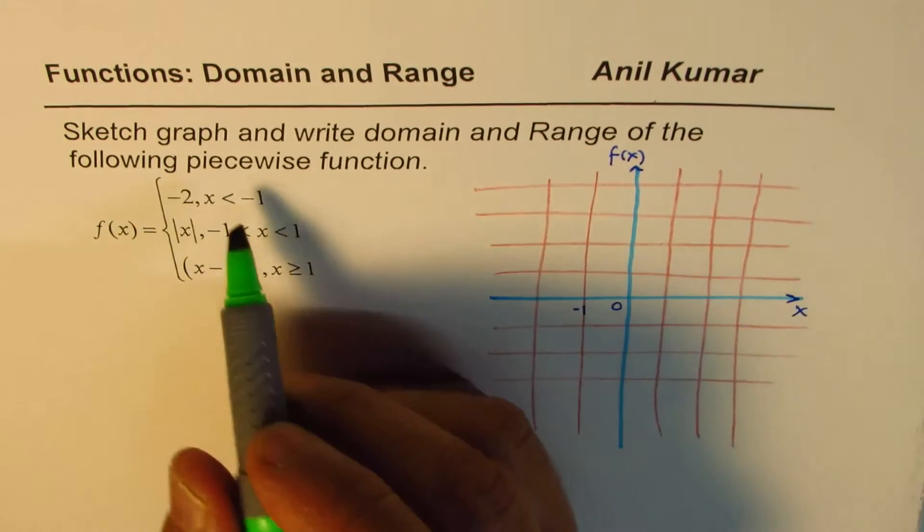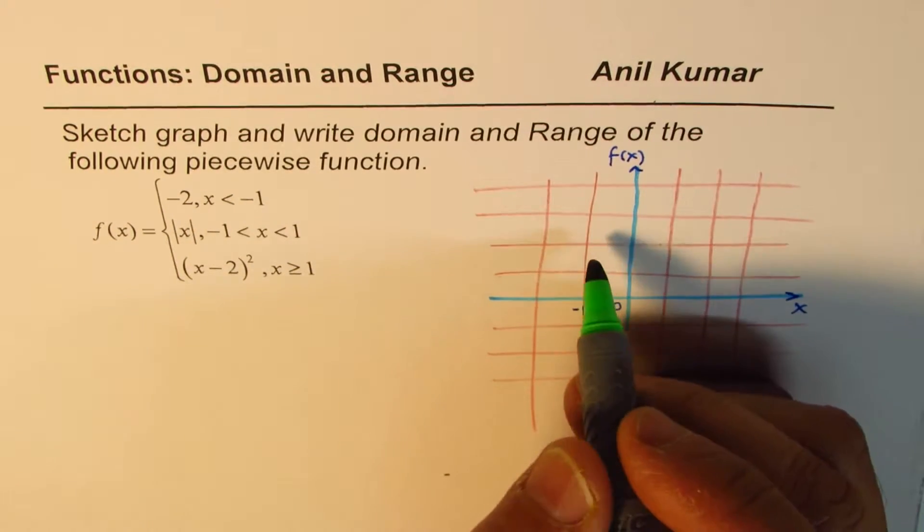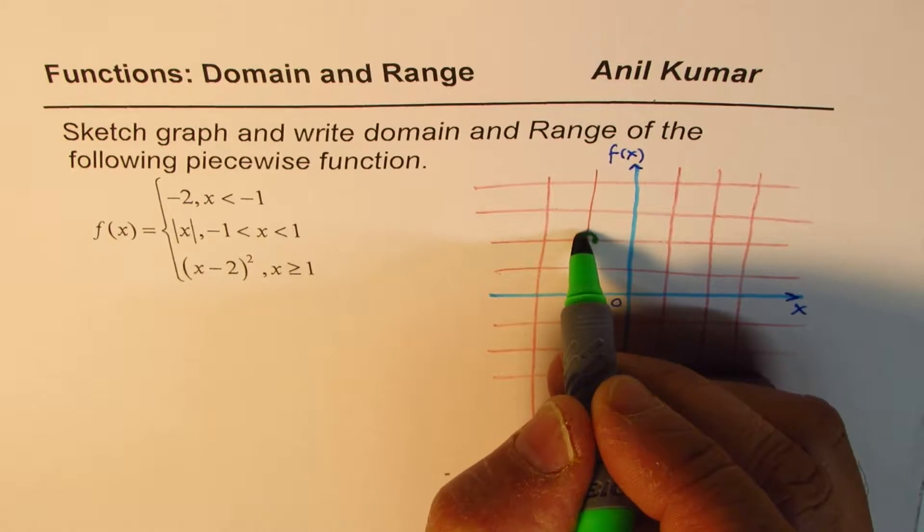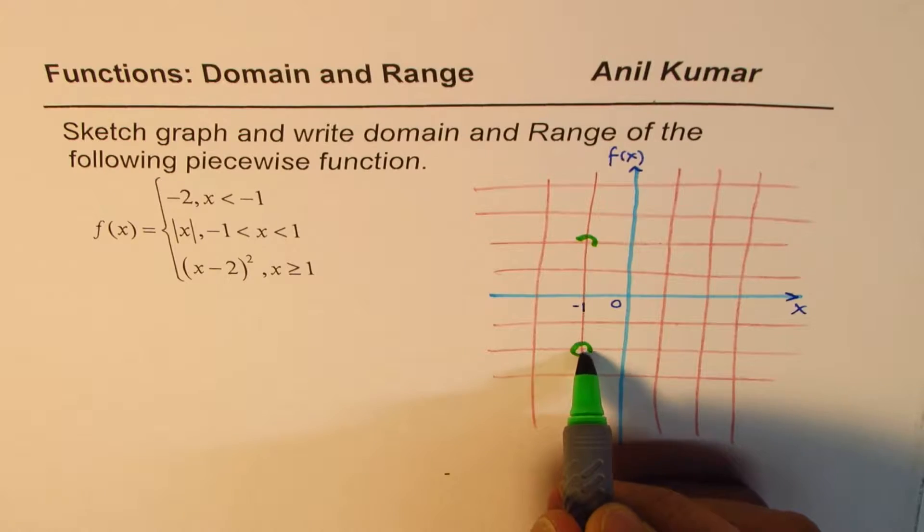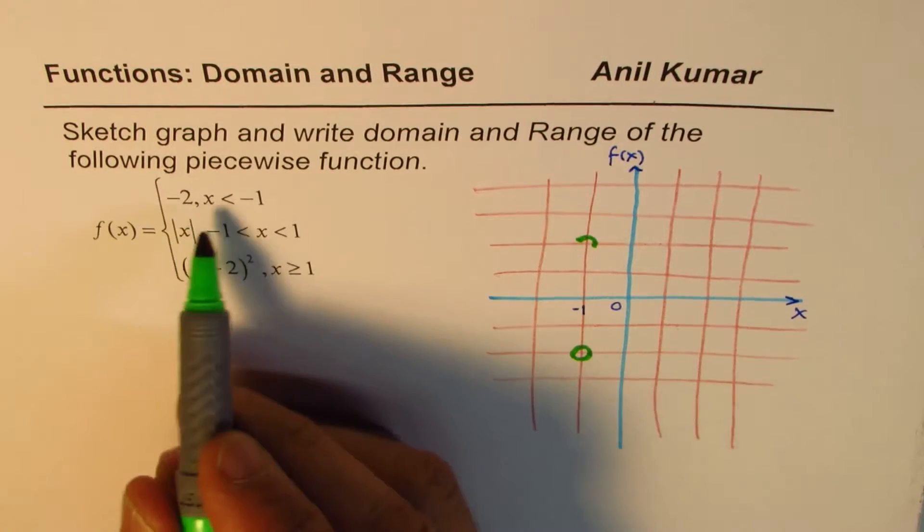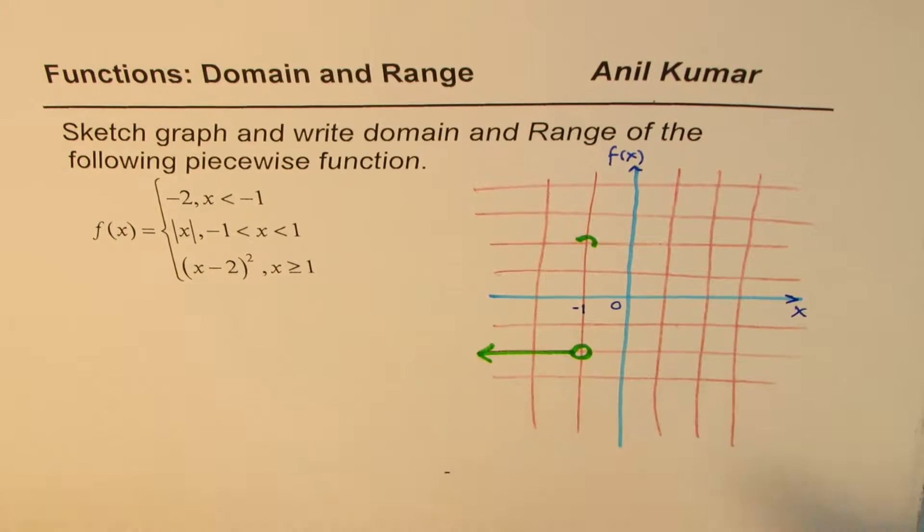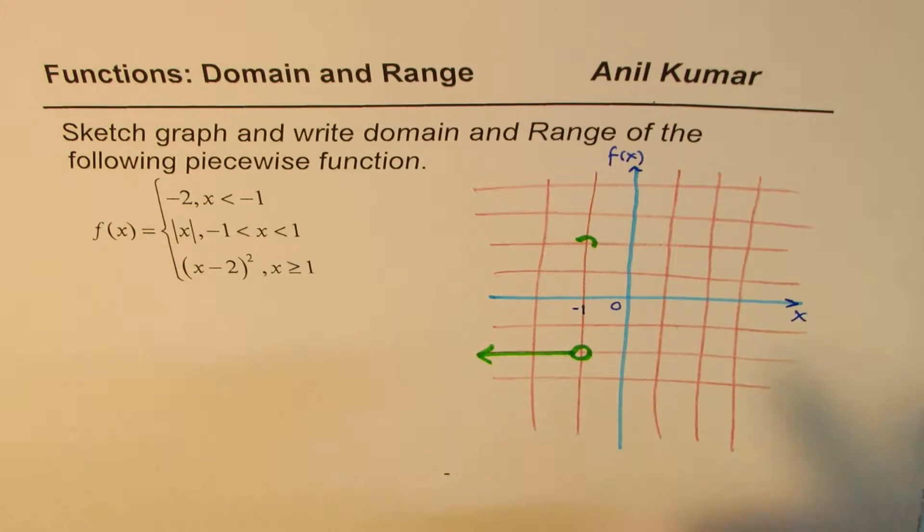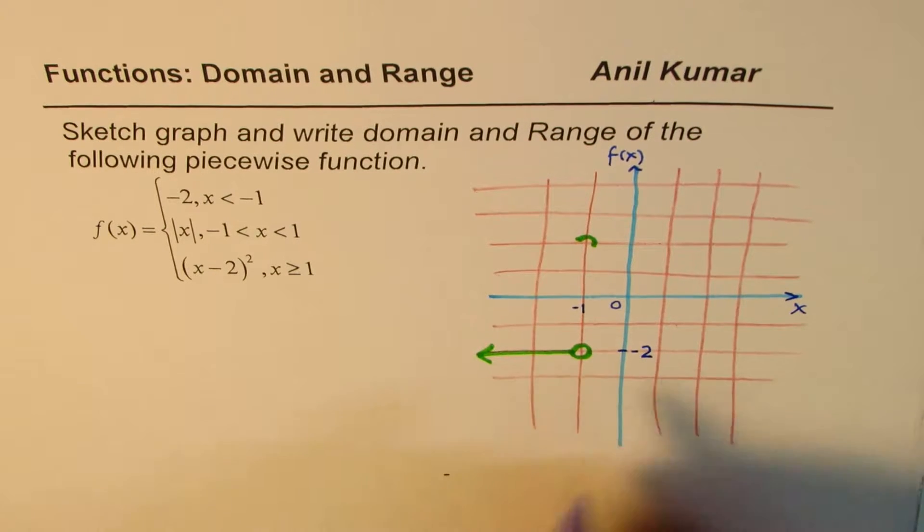So at minus 1 it is less than but not equal to, right? So we'll start with open circle at, I'm sorry, this is minus 2. Minus 2 is here. So at minus 2 we'll start at open circle and less than minus 1 means on the left side. So it goes like this. So we get first part, which is shown in green here, this is minus 2.